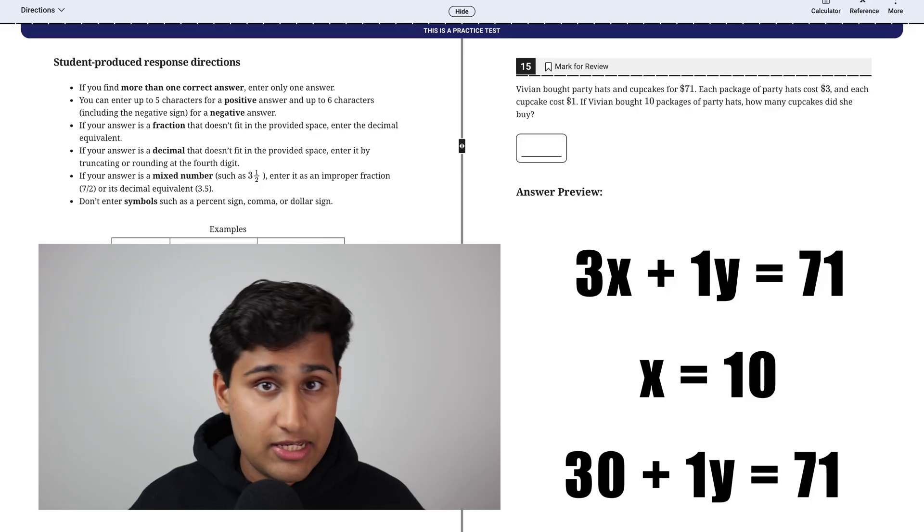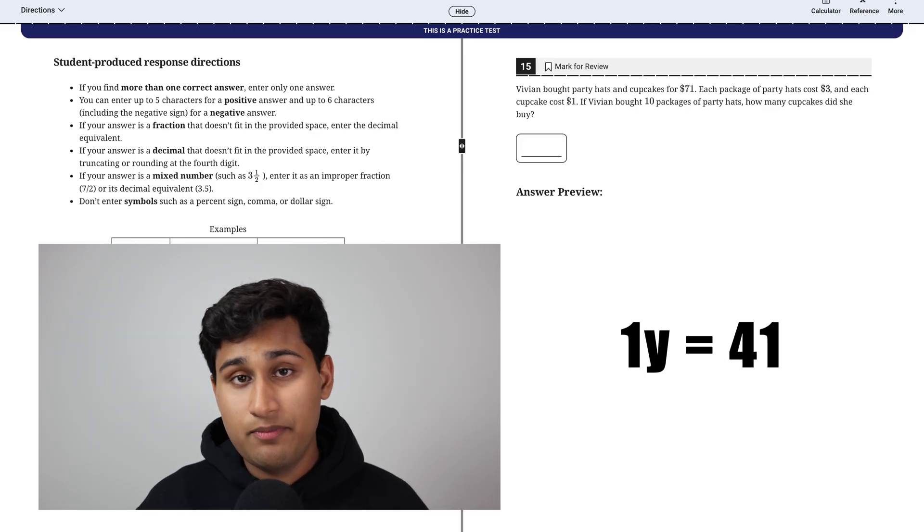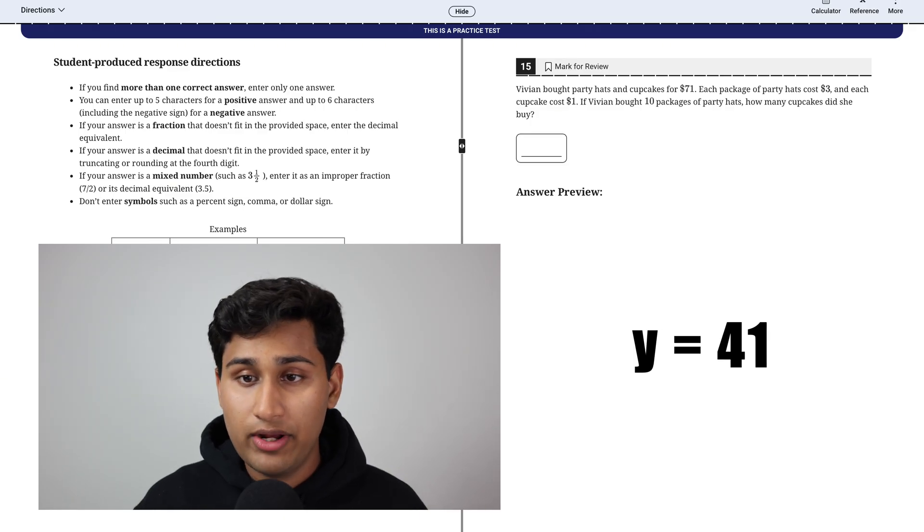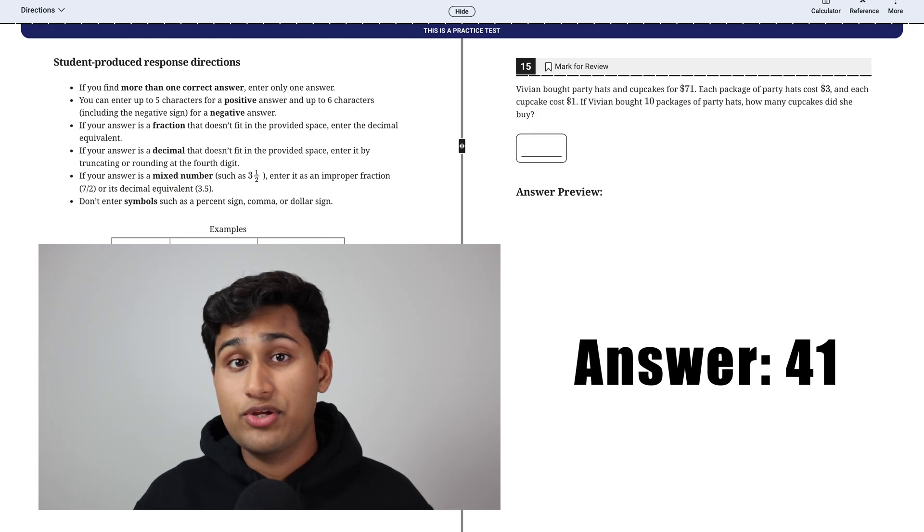So then we get 30 plus one Y because three times X, three times 10 is 30. So 30 plus one Y equals 71. You subtract 30 from both sides. You get one Y equals 41 divide by one and you get Y equals 41. So the answer for cupcakes is 41.